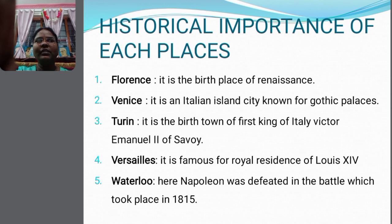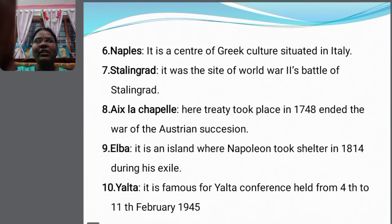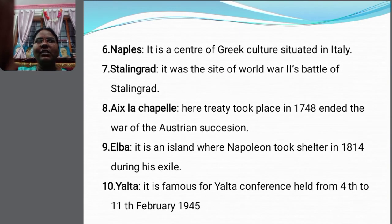Waterloo — here Napoleon was defeated in the Battle of Waterloo, which took place in the year 1815. Naples is the center of Greek culture, situated in Italy. Stalingrad was the site of World War II where the Battle of Stalingrad took place.